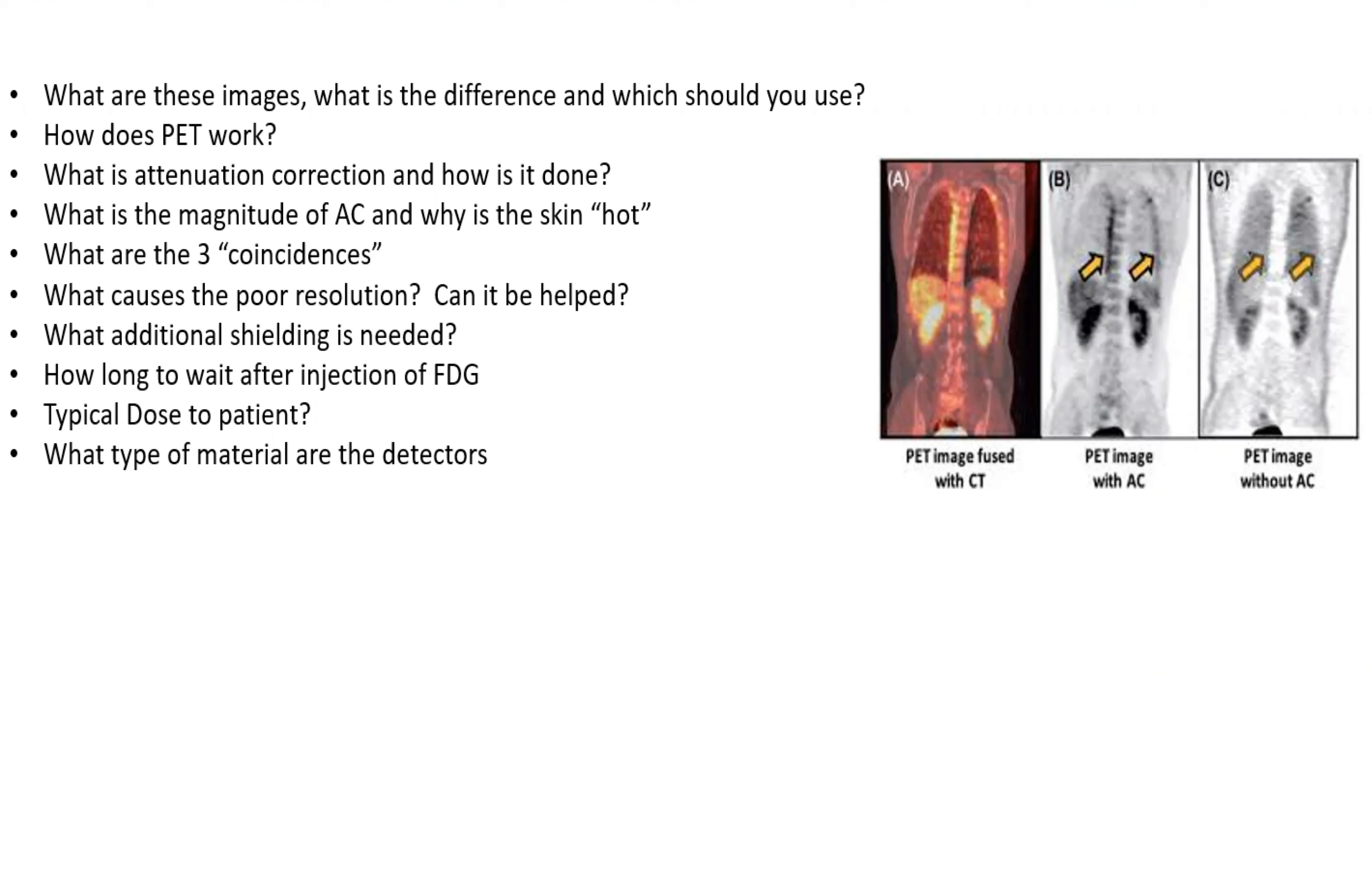How does PET work? What is attenuation correction and how is it done? What is the magnitude of attenuation correction and why is the skin hot? What are the three coincidences? What causes the poor resolution and can it be helped? What additional shielding is needed? How long to wait after an injection of FDG? What is the typical dose to the patient and what type of materials are the detectors?